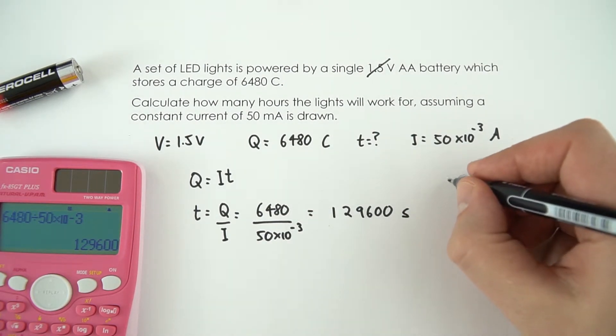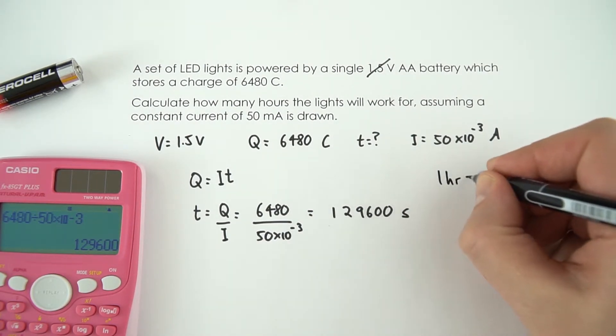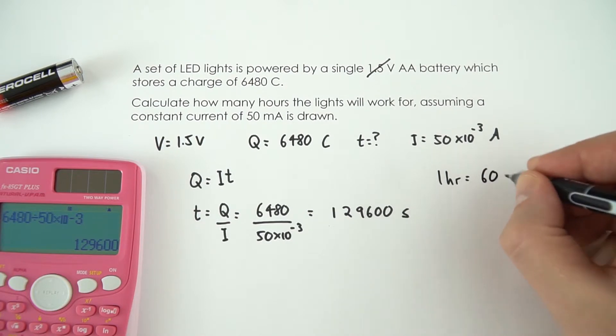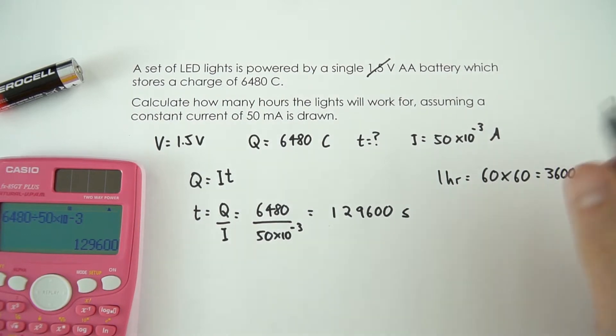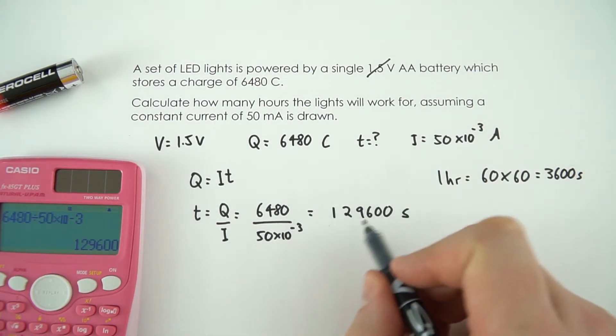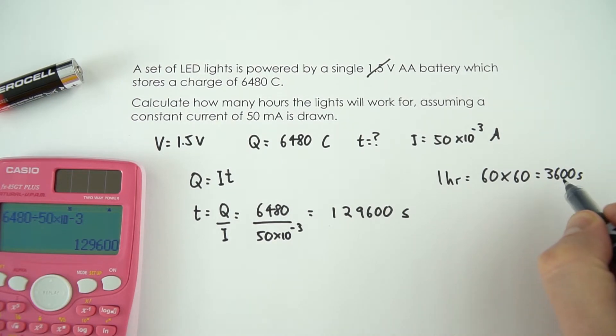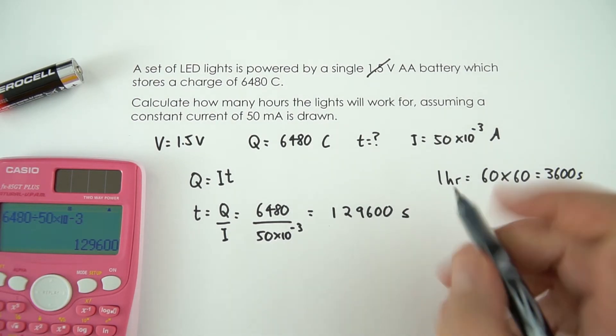Now if you've got an hour, one hour is going to be equal to 60 minutes times 60 seconds which is 3600 seconds. So if I take this large amount of time in seconds, I divide it by 3600, that will then give me my time in hours.